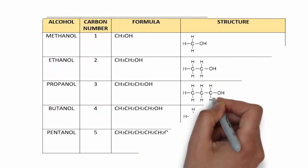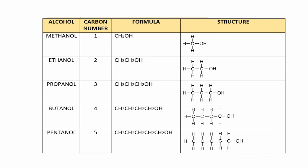For alcohols, all stem names are used starting from one carbon atom. Methanol has one carbon atom, then ethanol, propanol with three, butanol with four, and pentanol with five carbon atoms respectively. The functional group of alcohols is the hydroxyl group, -OH. When we see -OH attached to a hydrocarbon, we can identify it as belonging to the alcohol homologous series.